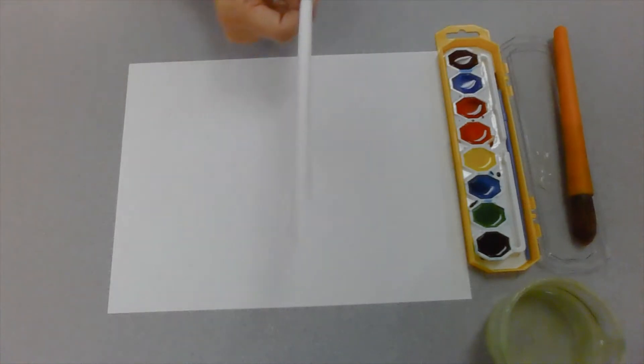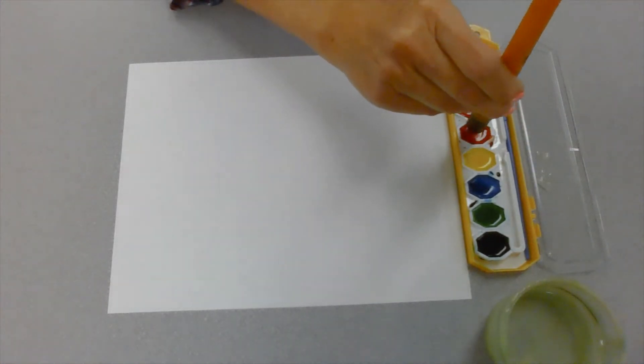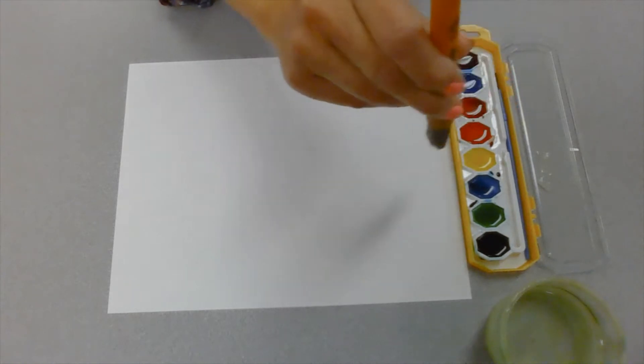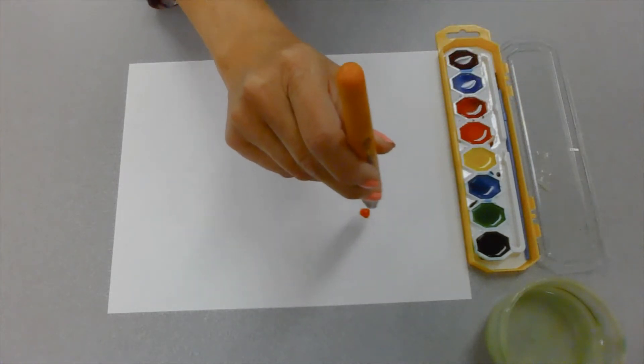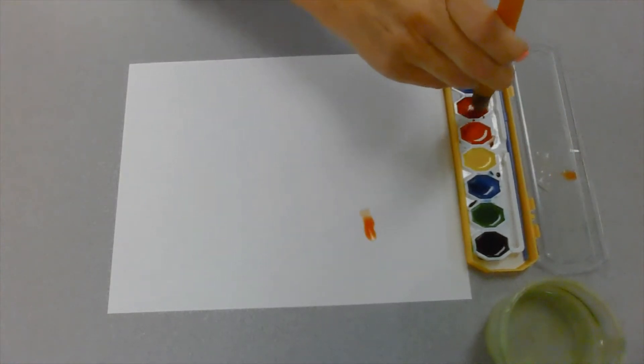Okay, boys and girls. This is our next activity with just using your paint. And remember my straw that we made? Look at what I'm going to do. You could do this at home. Just a little dot. Then you use your straw to blow it.